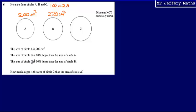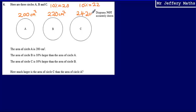We're then told that the area of circle C is 10% larger than the area of circle B. The area of circle B is 220, so this time our 10% is going to be 10% of 220. 10% of 220 is 22, which means that the area of circle C is going to be 242 centimetres squared — adding that 22 on to the 220.